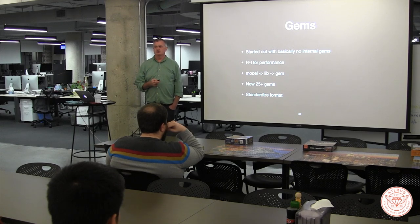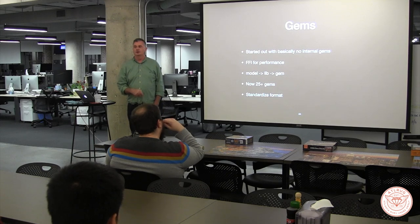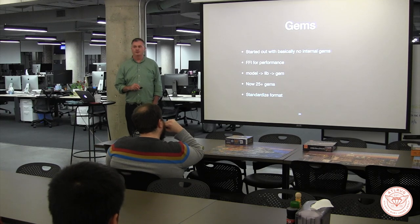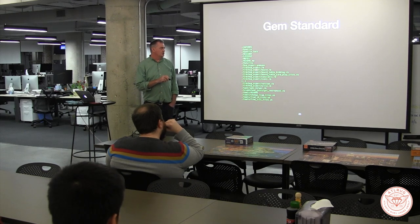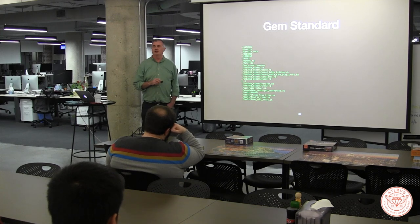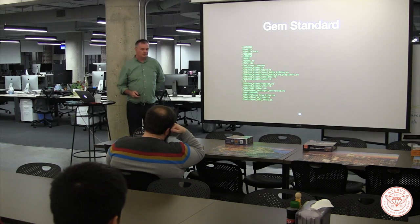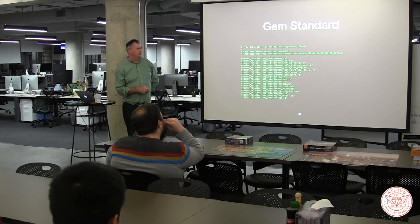We started out with no gems and slowly moved things into the lib directory when needed, then created gems. We now have about 25 different gems. When we first started creating them, we put everything inside one file, which got very large. We now move to the more common approach of having separate routines in separate files.